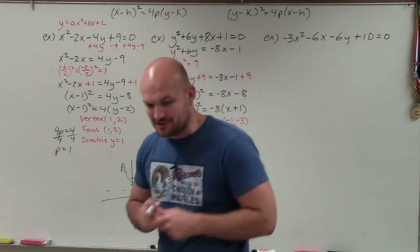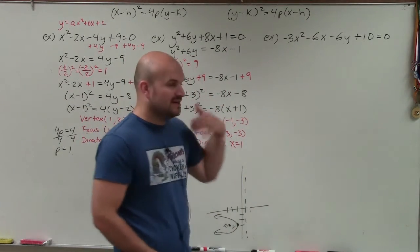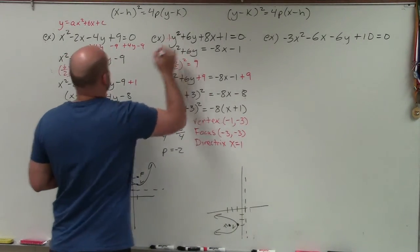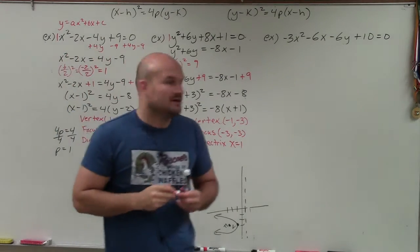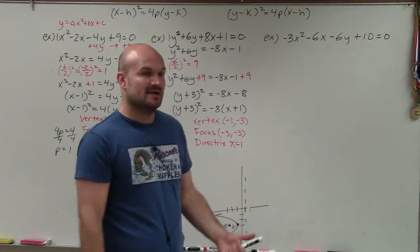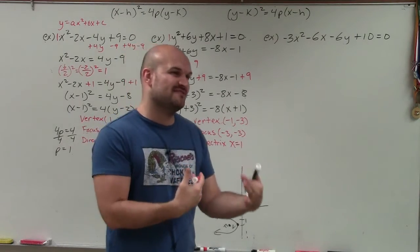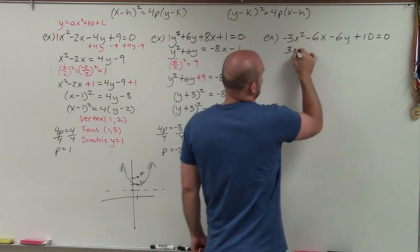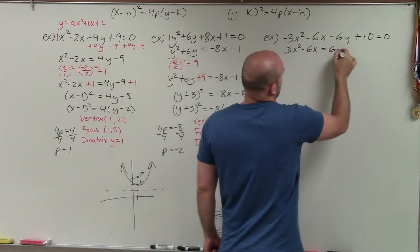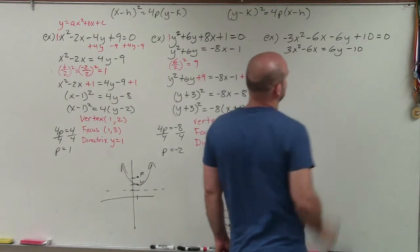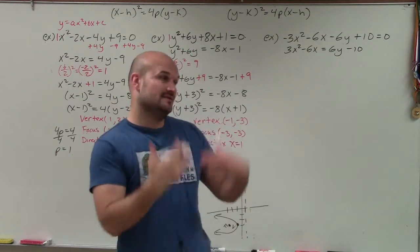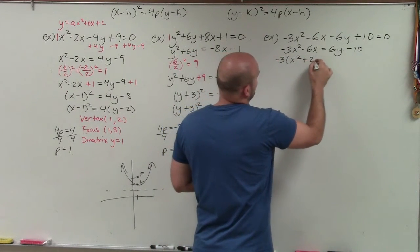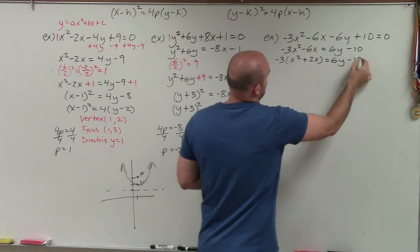Now let's look at one that's a bit more difficult. When completing the square, we can only do so when the coefficient of the quadratic term is 1. In this case, we have a coefficient of negative 3. So after rearranging so that the x terms are together on one side, we need to factor out that negative 3 first. After factoring out the negative 3, we get: x² + 2x = 6y − 10.